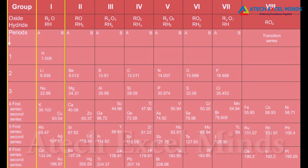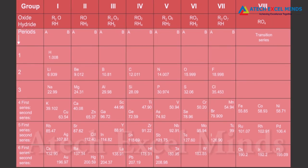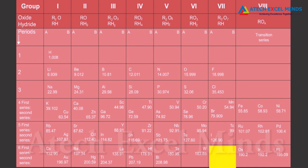Mendeleev's periodic table contains vertical columns called groups and horizontal rows called periods. To group elements together, Mendeleev had to place an element with a slightly greater atomic mass before one with a slightly lower atomic mass. For example, cobalt, having a higher atomic mass than nickel, was placed before nickel. The sequence was inverted so that elements with similar properties could be grouped together.